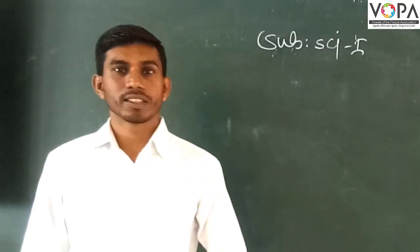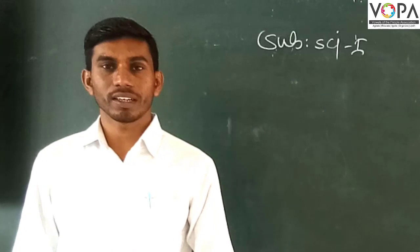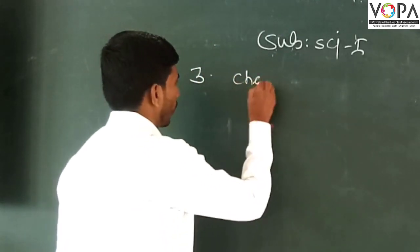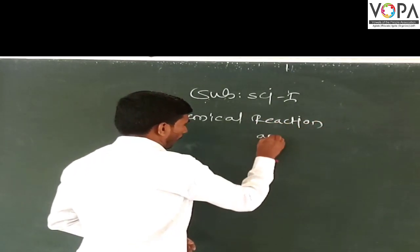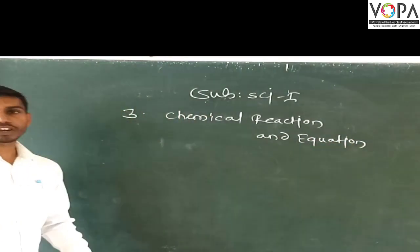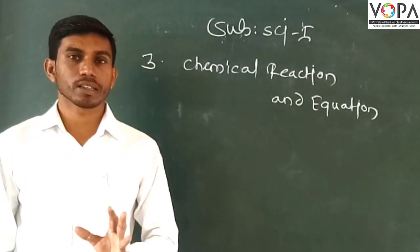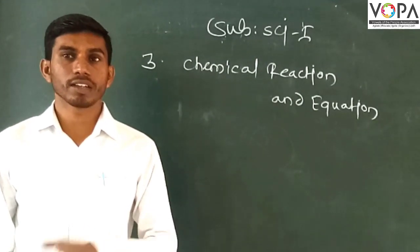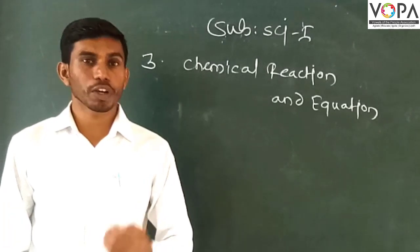This is Science 1, which is number 3: chemical reactions and equations. So this is chemical reactions and equations. What are chemical reactions? We will now discuss how things change, which is the chemical reaction. Let's know how to change the effects.